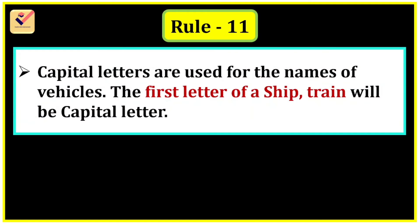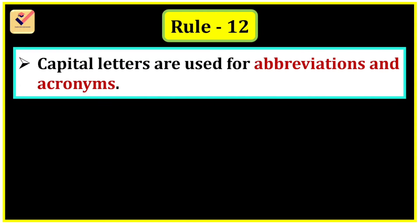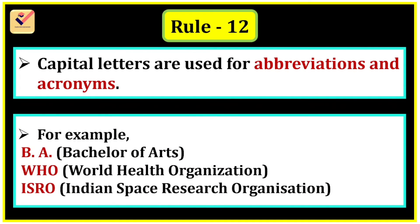Rule 11: Capital letters are used for the names of vehicles. The first letter of a ship or train will be a capital letter. For example: the Titanic, the Rajdhani Express, etc. Rule 12: Capital letters are used for abbreviations and acronyms. For example, B.A. — Bachelor of Arts; WHO — World Health Organization; ISRO — Indian Space Research Organization.